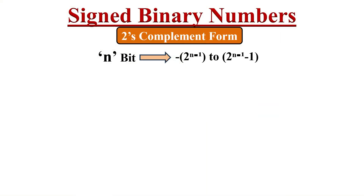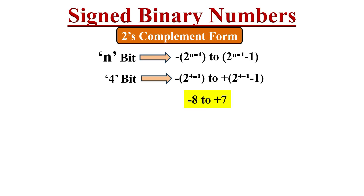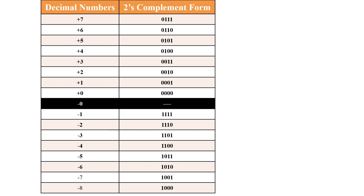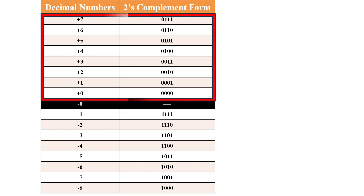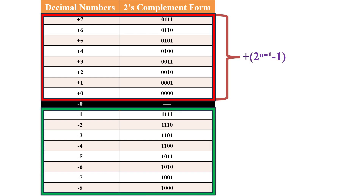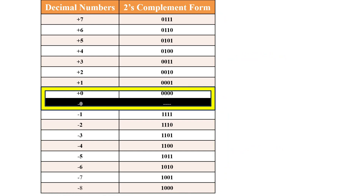Using n bits, the range of numbers representable in two's complement form is from minus 2 to the power of n minus 1 to plus 2 to the power of n minus 1 minus 1. Using 4 bits, this is from minus 8 to plus 7. The table shows positive numbers from 0 to plus 7 and negative numbers from minus 1 to minus 8. In two's complement form, 0 is represented only once — its two's complement is the same in 4-bit representation. This is the biggest advantage of two's complement form.